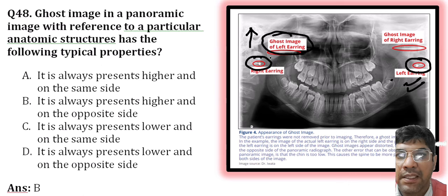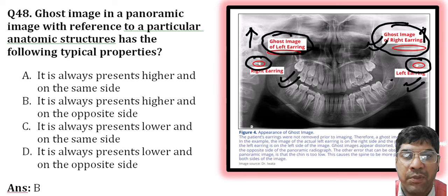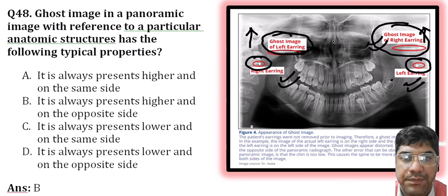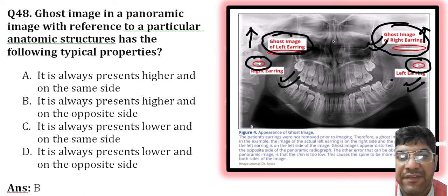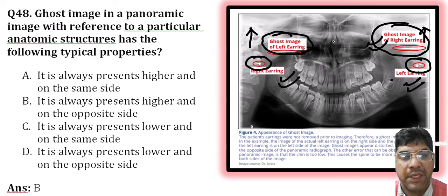Similarly, the ghost image of the right earring would be seen at a higher level on the opposite side. So the ghost image in a panoramic image is typically present on the opposite side and at a higher level, due to the upward inclination of the X-ray beam. The answer would be B.